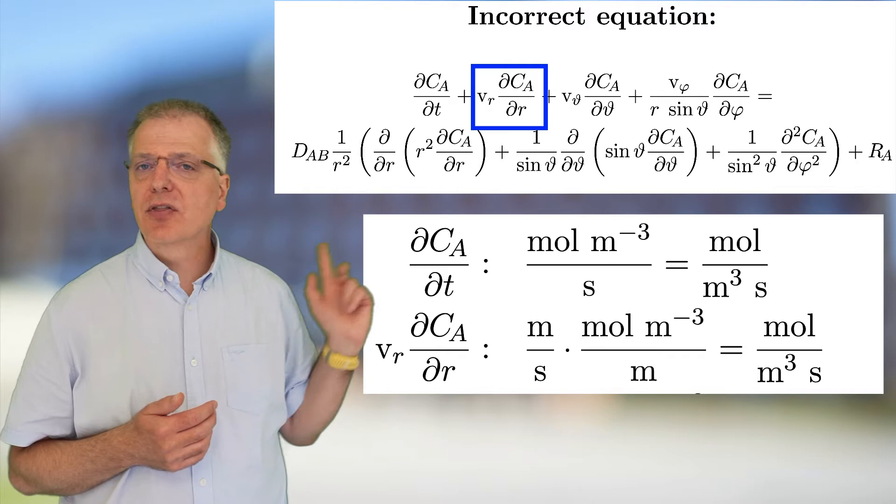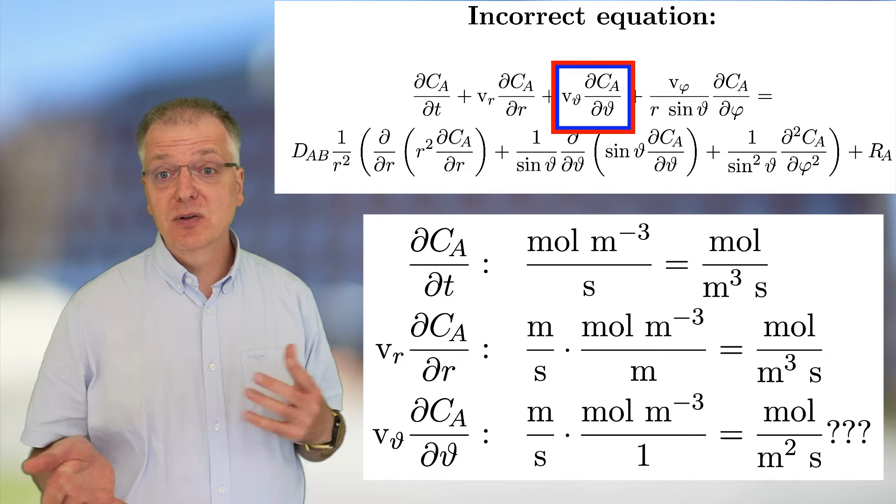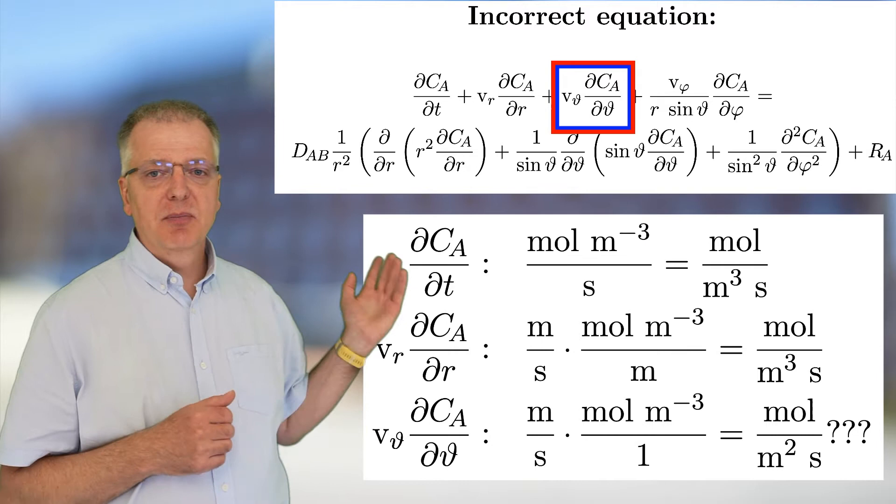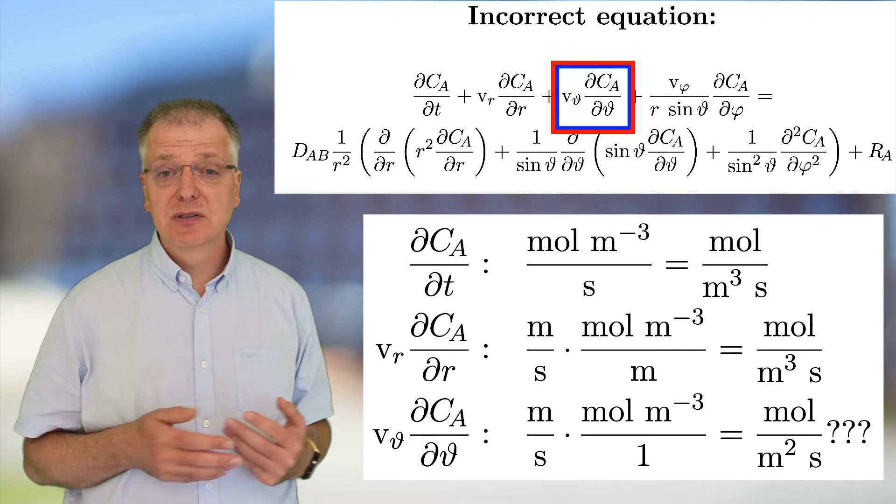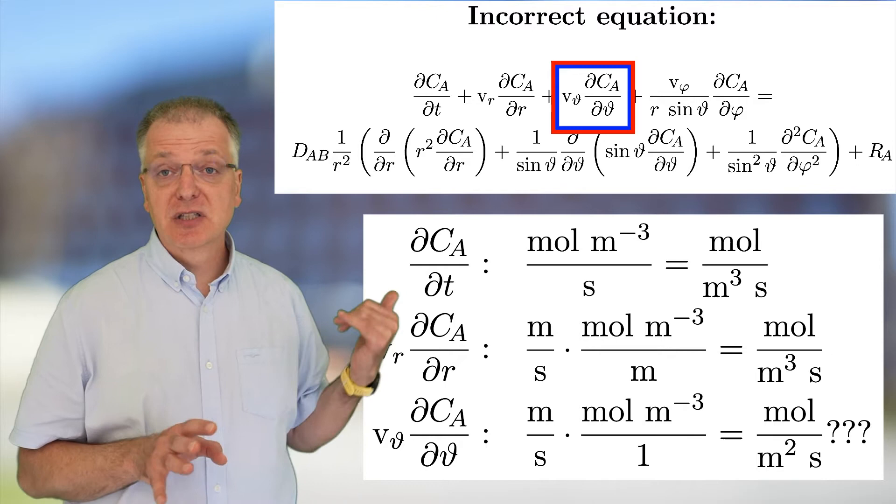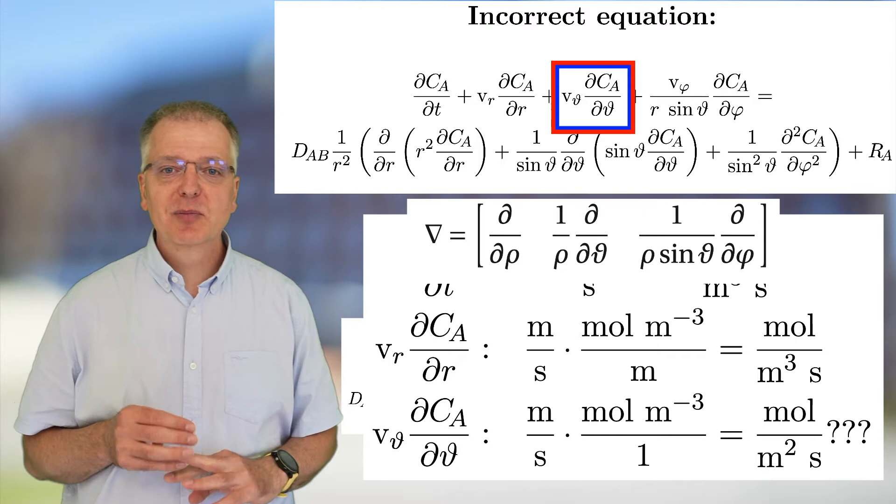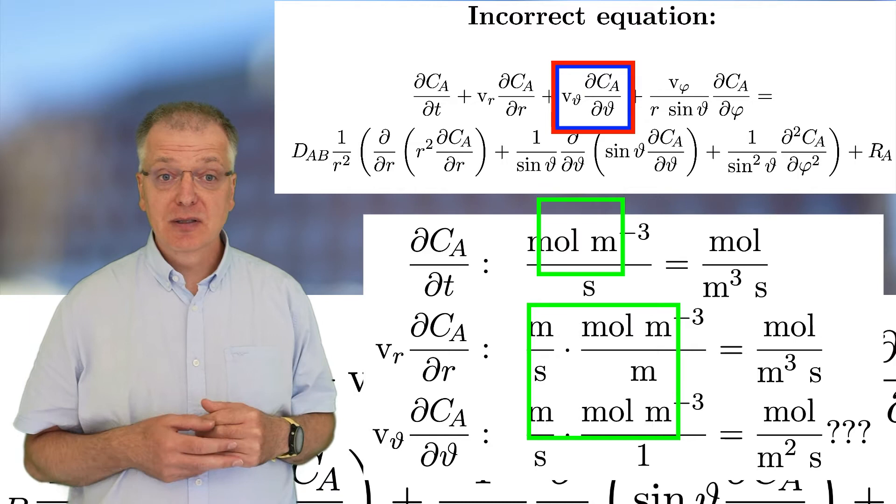But there is something wrong with the next term. Phi is an angle, and for now you can think of that as unitless. Well, it's kind of a fraction, but more on that later. So we get meter per second multiplied with mol per cubic meter and get mol per square meter and second. This clearly does not make any sense and must be wrong. As it happens, in the correct equation found on another page in the handbook, the velocity should be divided with r here, which gives us the correct unit.